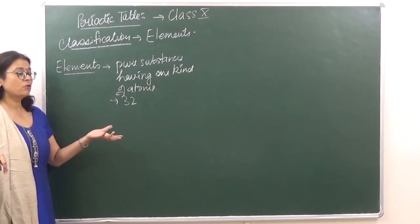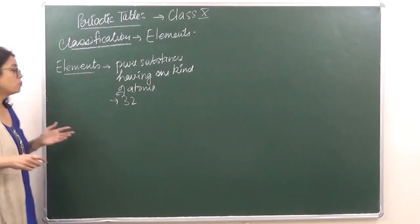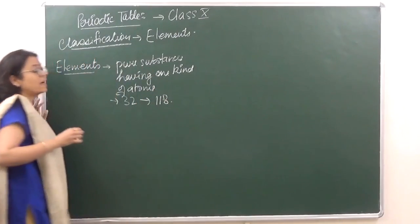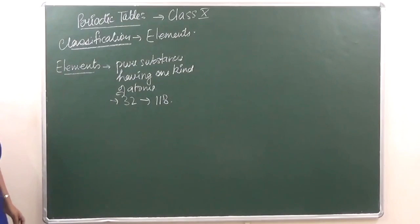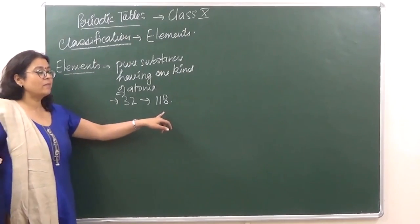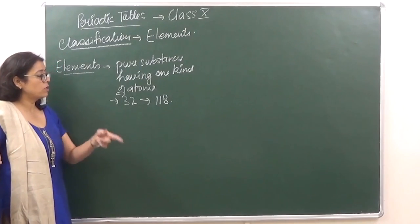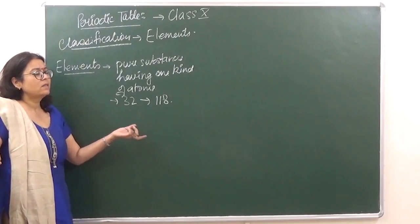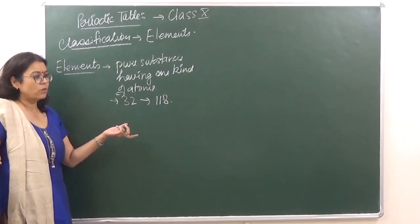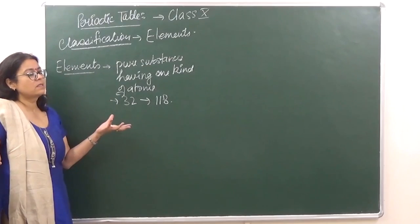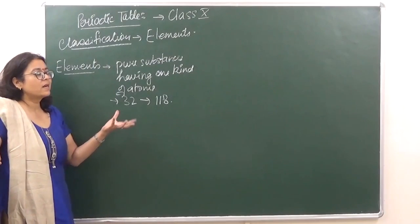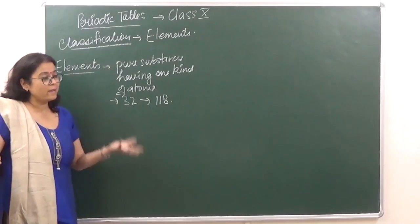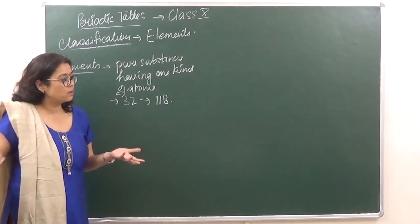As of today, the total number of elements is 118. The 118th element was discovered in December 2016 and was authenticated by the IUPAC, which is a committee of scientists that approves the names of elements.